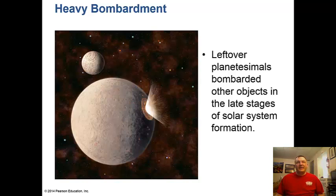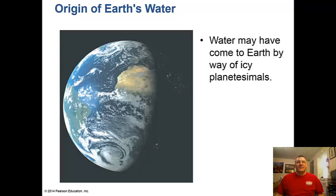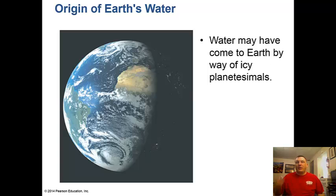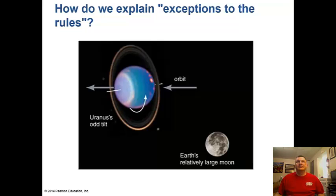In the process of heavy bombardment, leftover planetesimals bombarded other objects in the late stages of solar system formation. How did Earth get its water? Water may have come to Earth by way of icy planetesimals and comets striking the Earth, bringing massive amounts of water and ice. Of course, there are always exceptions to the rule - Uranus is tilted sideways 97 degrees.